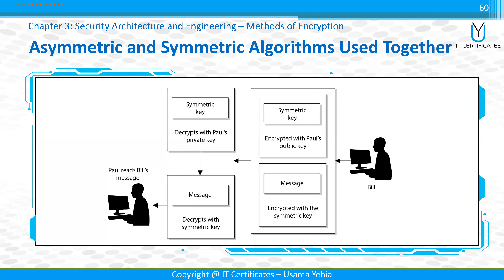Now an important issue: how to work with asymmetric and symmetric together. Unfortunately, we cannot use asymmetric alone or symmetric alone - symmetric has problems with scalability and key exchange, while asymmetric is very slow. How can we combine both? Let's use this example: Bill wants to send a message to Paul.